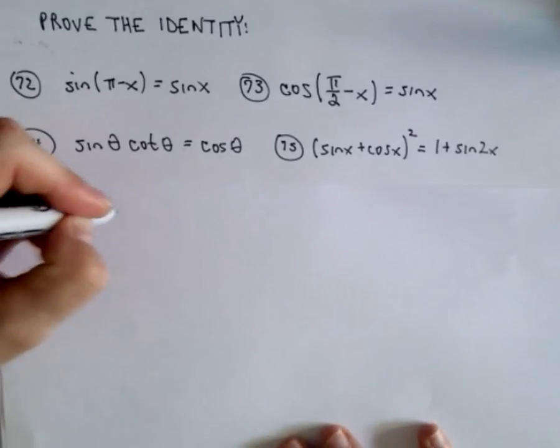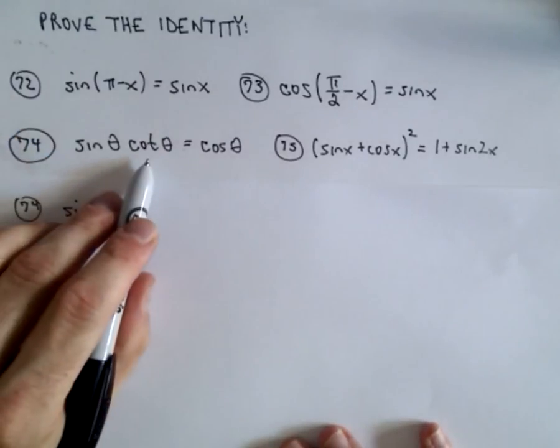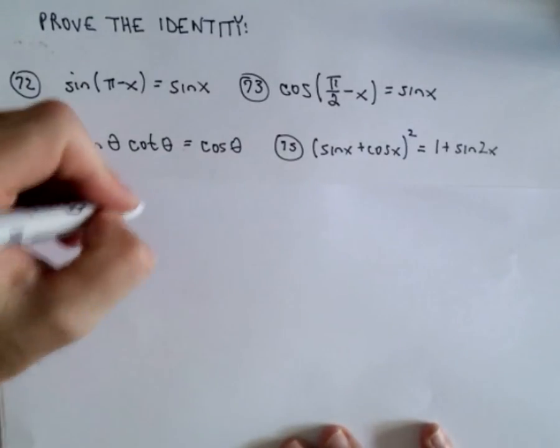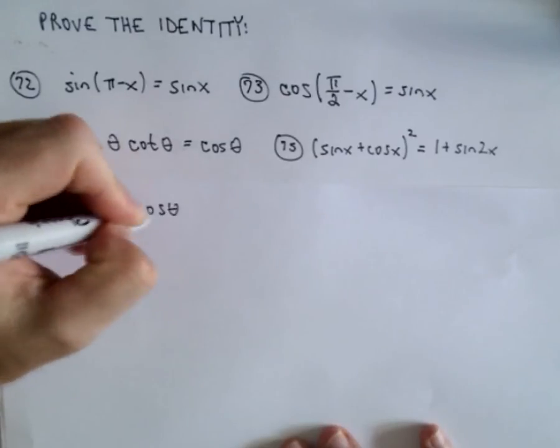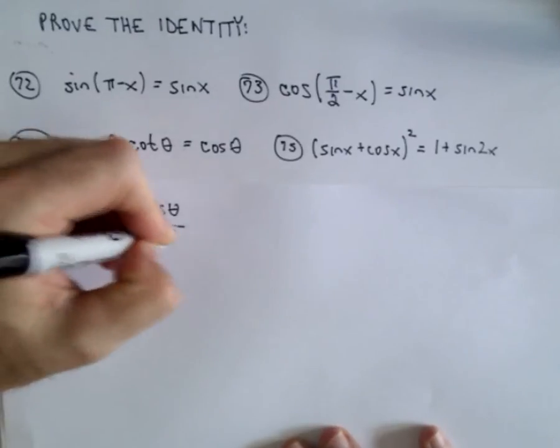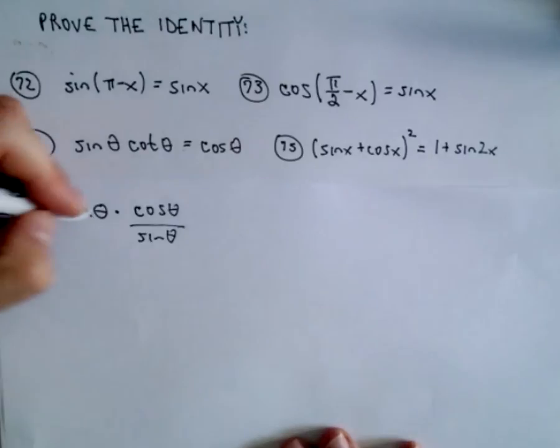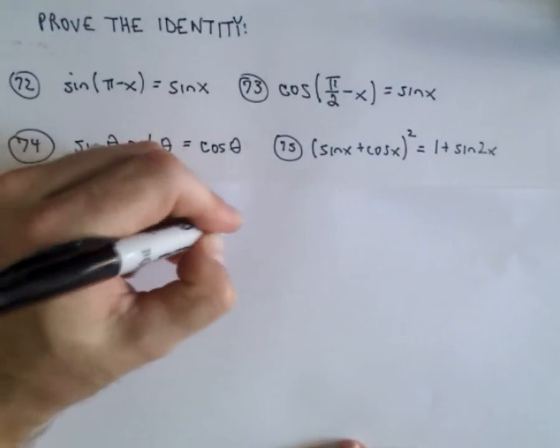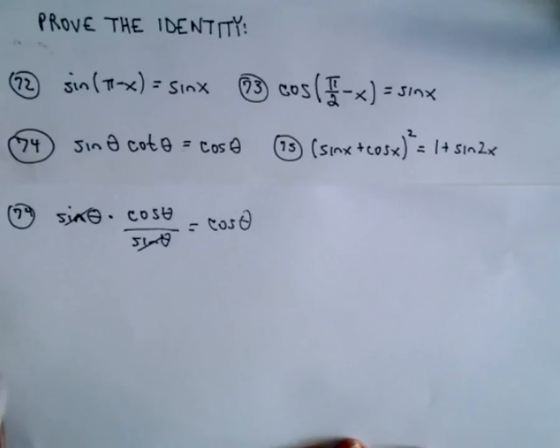So we've got sin θ. Well, tangent is sine over cosine, cotangent is going to be cosine over sine. Well, if you cancel out the sine factors, hey, you're simply left with cos θ just like you wanted.